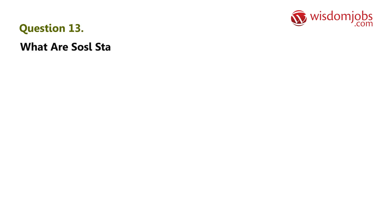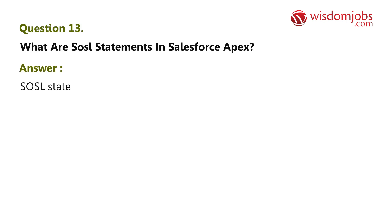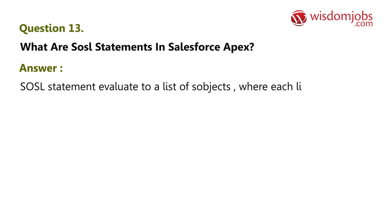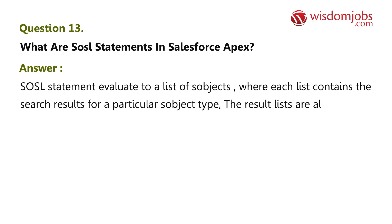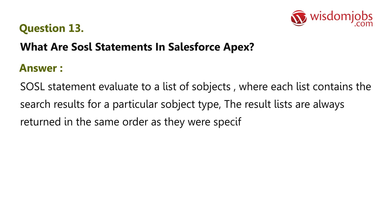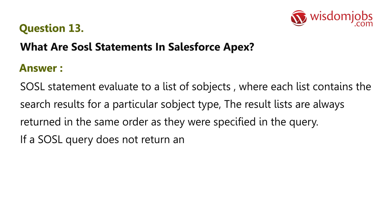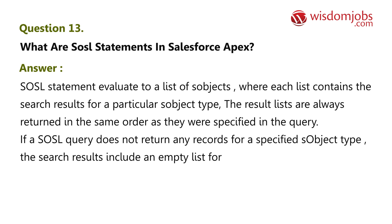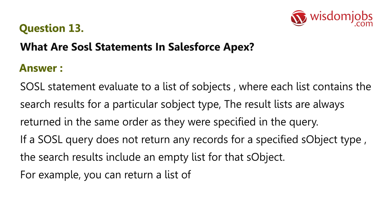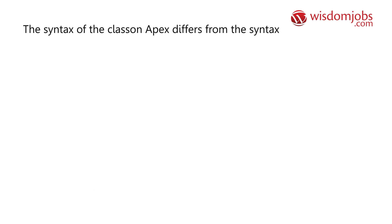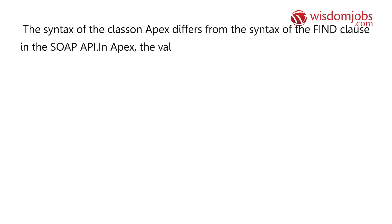Question 13: What are SOSL statements in Salesforce Apex? Answer: SOSL statements evaluate to a list of sObjects where each list contains the search results for a particular sObject type. The result lists are always returned in the same order as specified in the query. If a SOSL query returns no records for a specified sObject type, the search results include an empty list. For example, you can return a list of accounts, contacts, opportunities, and leads beginning with a phrase. Note: the syntax in Apex differs from the SOSL find clause — in Apex the value of the find clause is demarcated with single quotes.